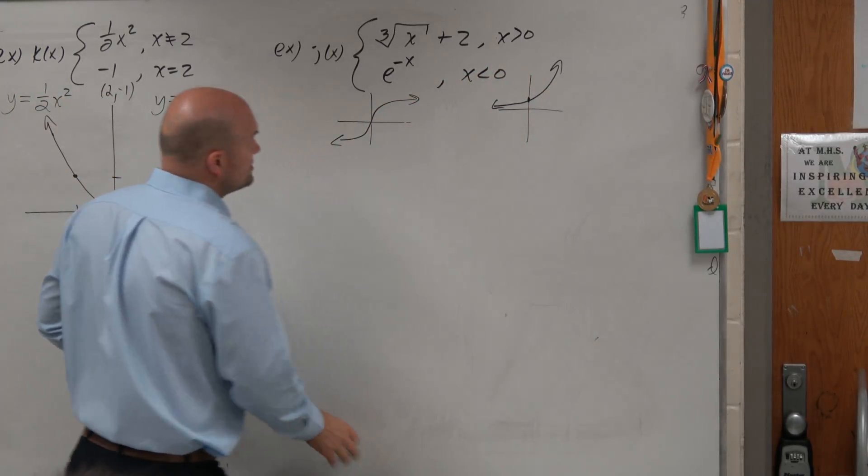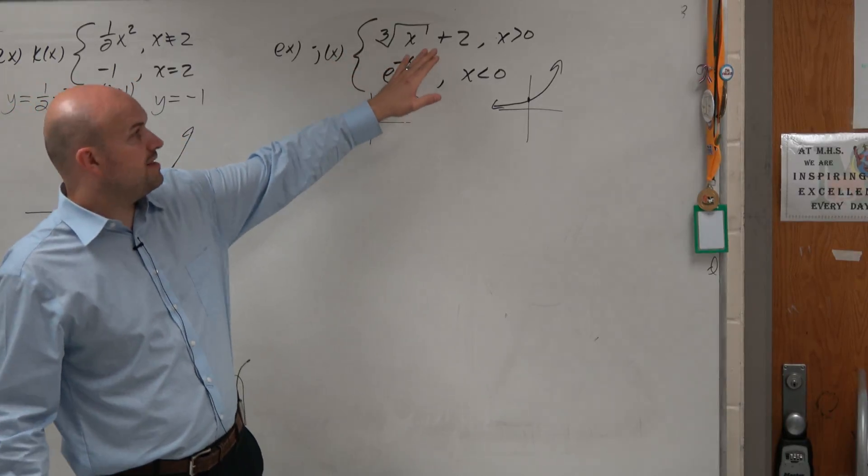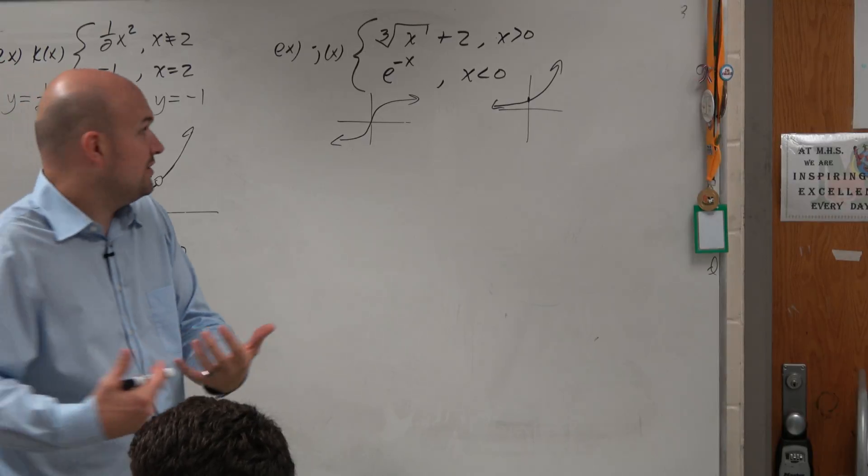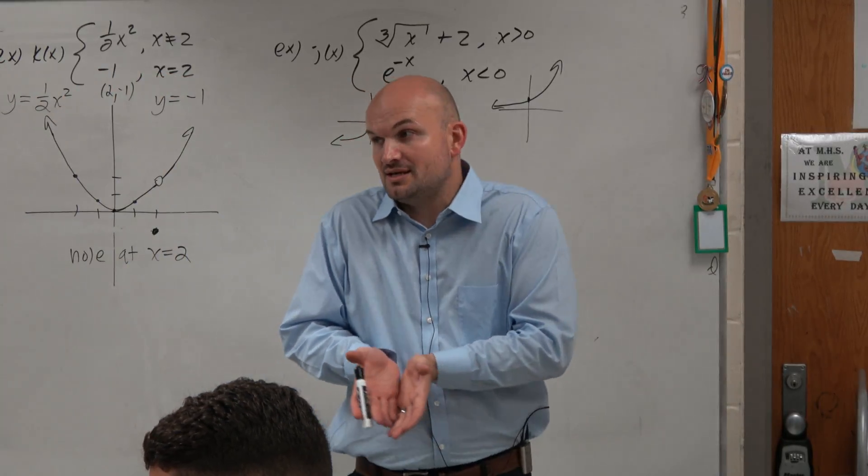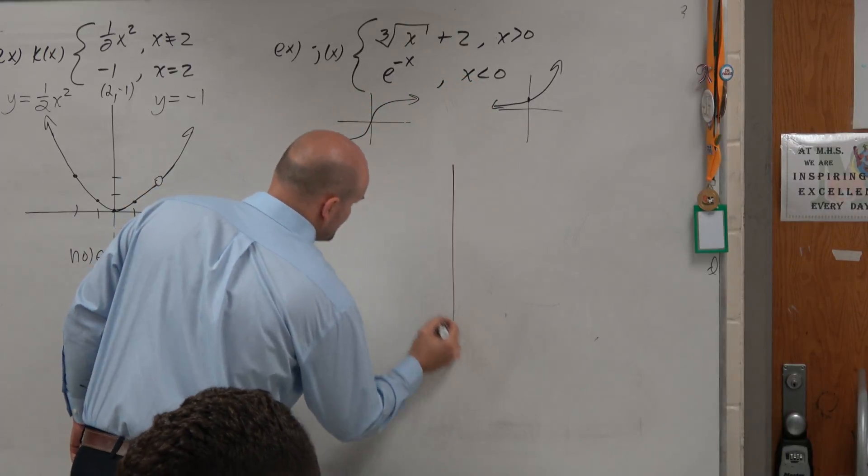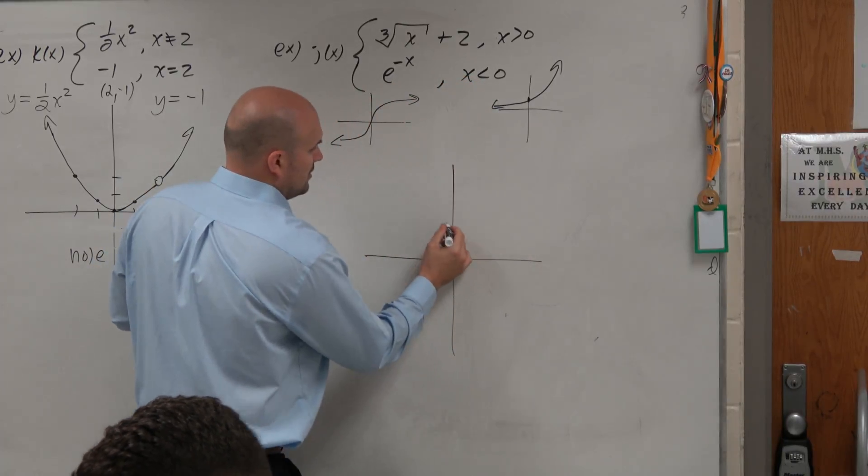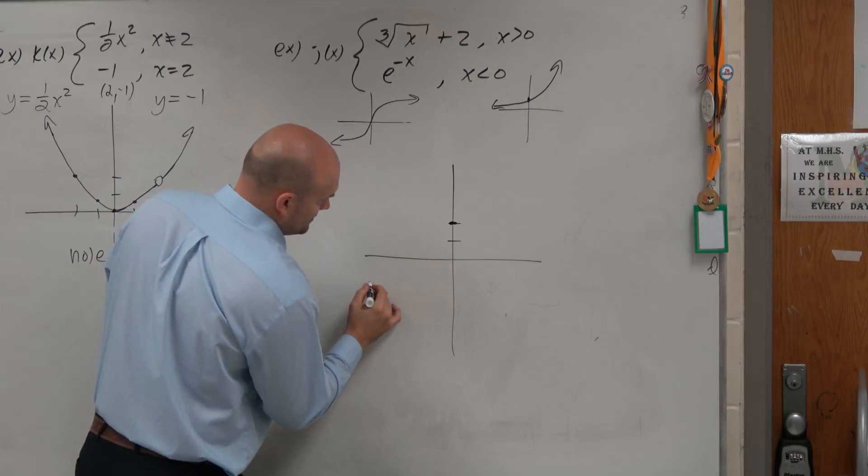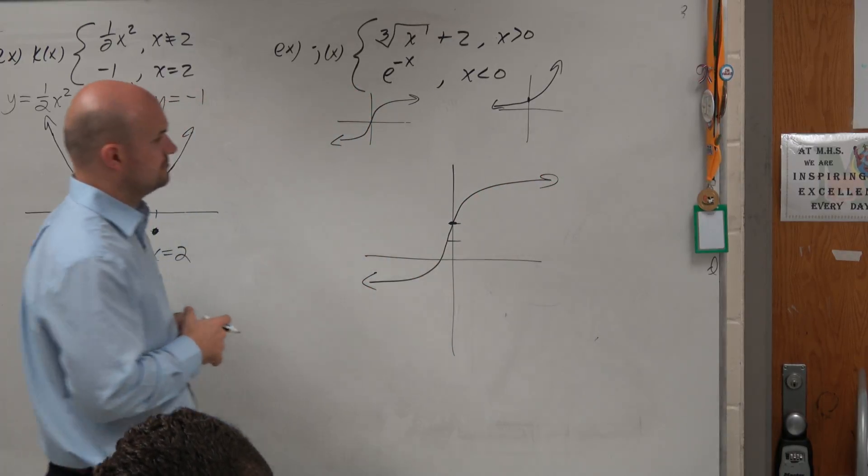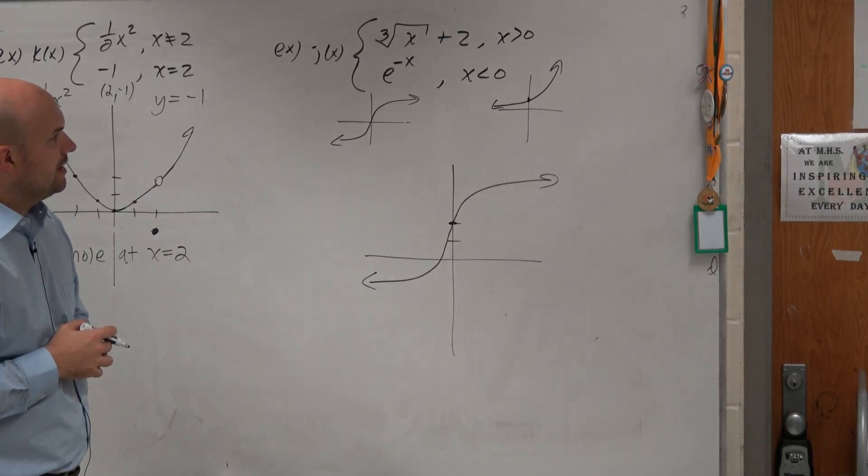So we have two functions. We have the cube root of x and then plus 2. So then we got to think, are we adding inside or outside? And we can see we're adding outside. So all that's doing to that graph is just shifting it up two units. Let's just sketch that graph up two units. It looks something like that.